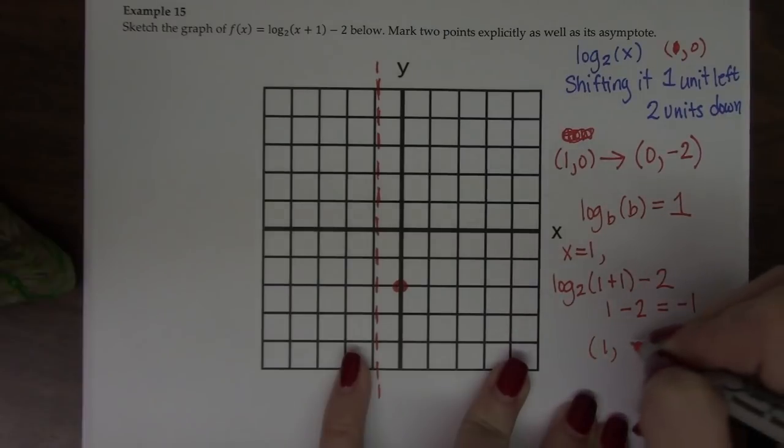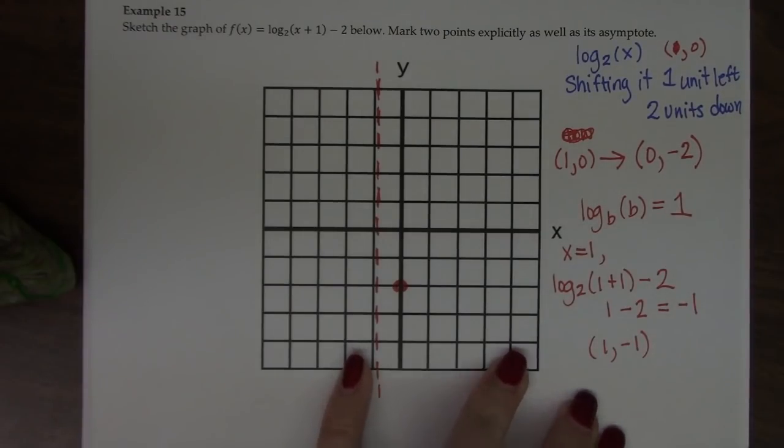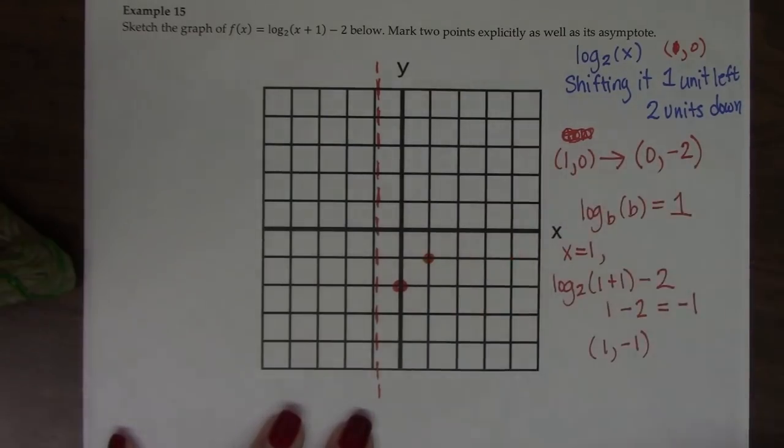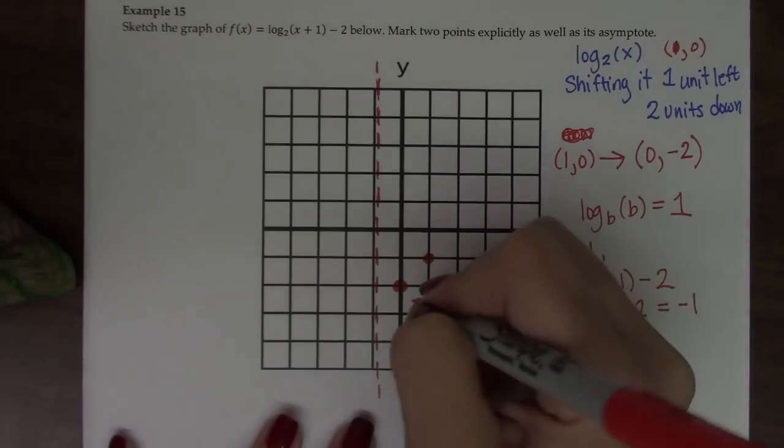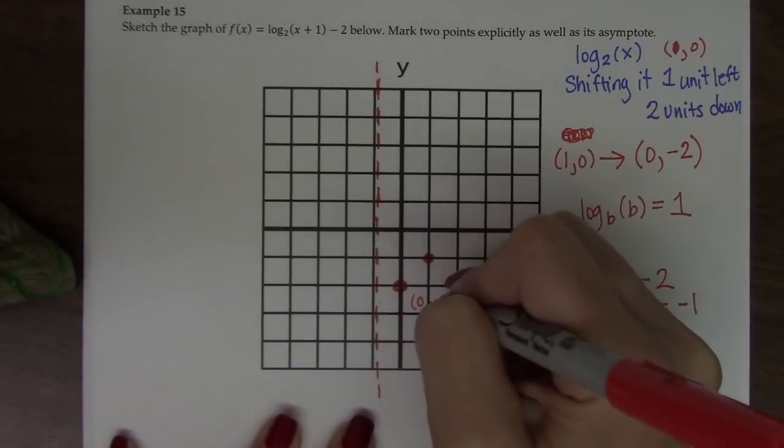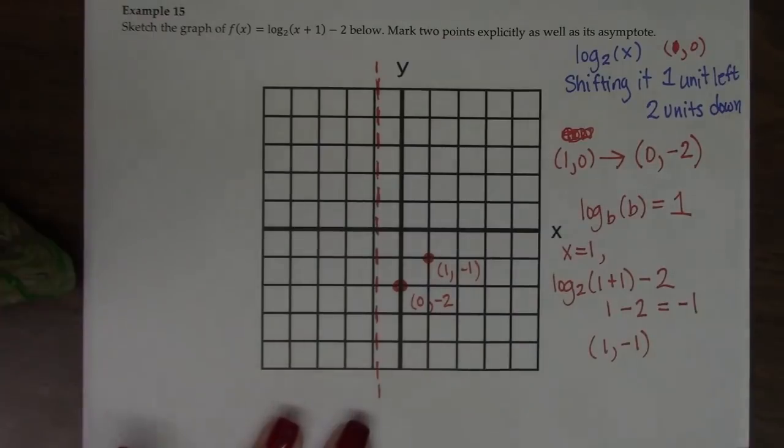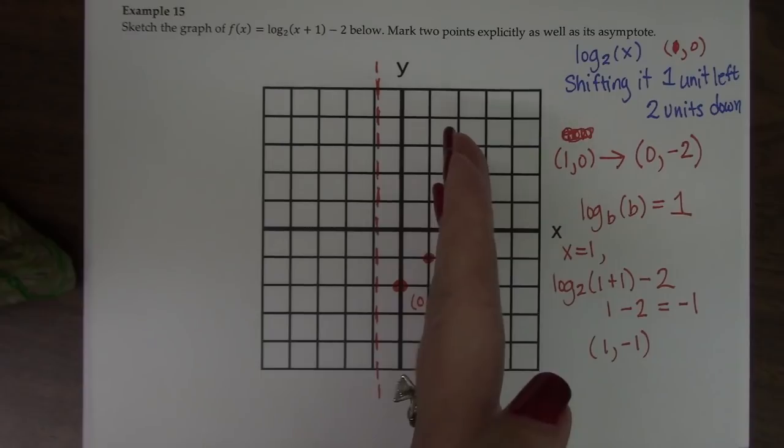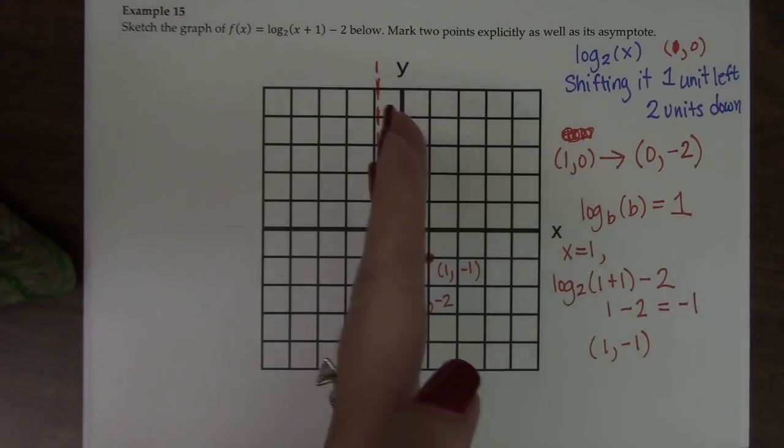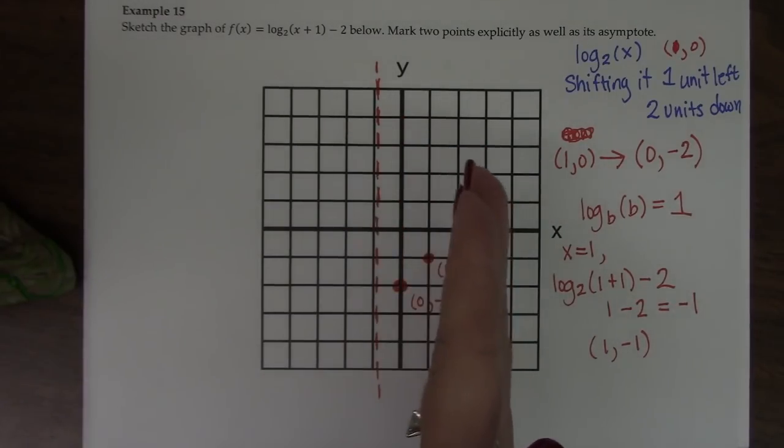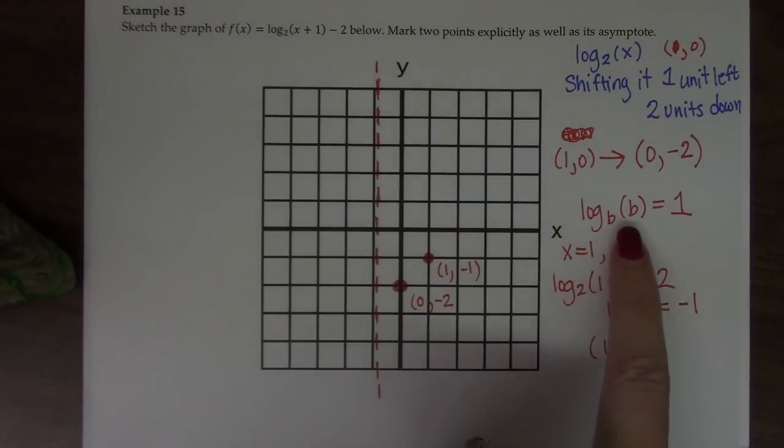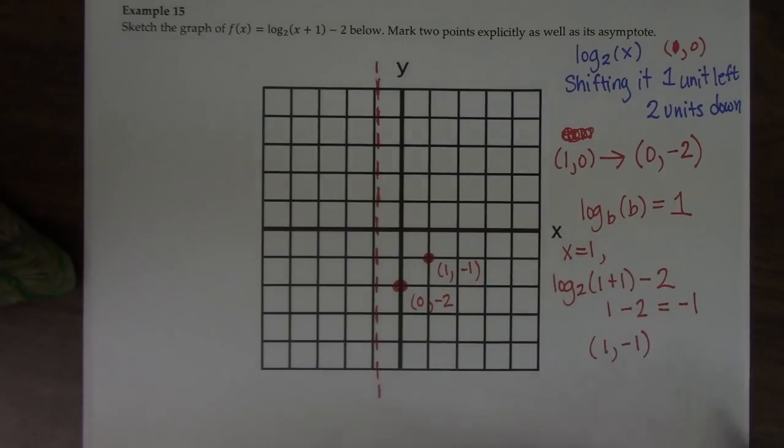So that means 1, negative 1 is on my graph. So if I go to 1, negative 1, there's another point on the graph. So we found one point by moving its original x intercept, shifting over and down like the graph said. We found a second point by taking advantage of the property that any log of its own base, so I just found a value x that would turn the inside expression into a 2 to match the base.